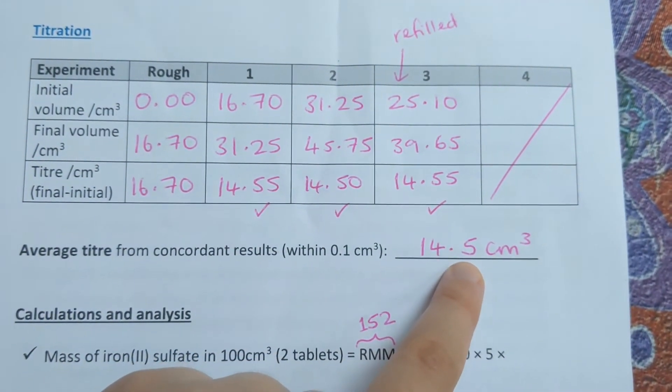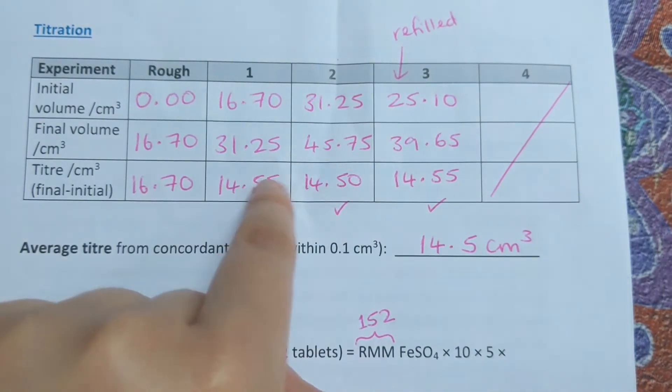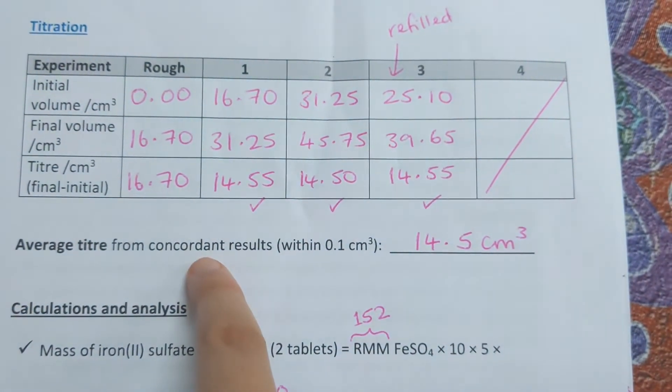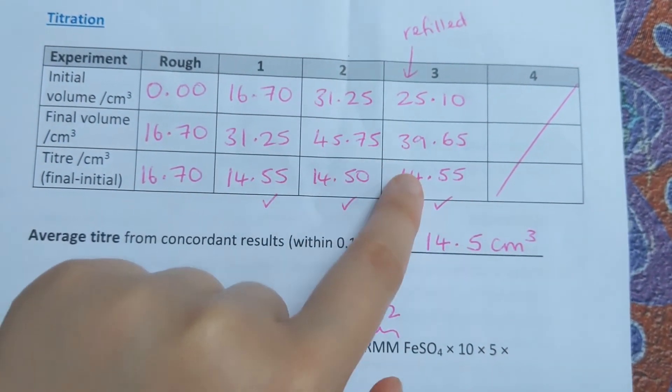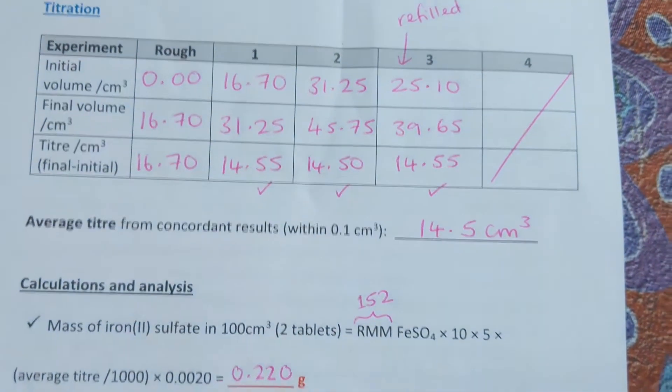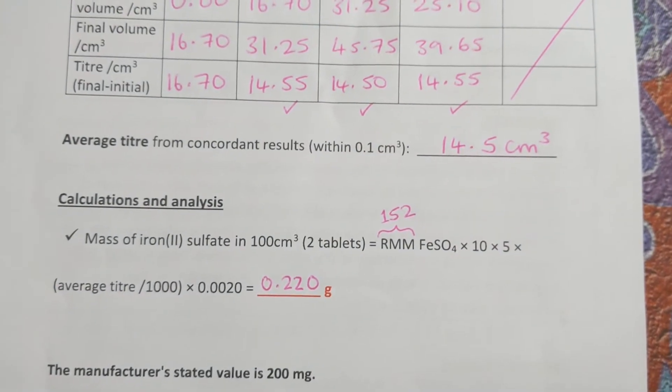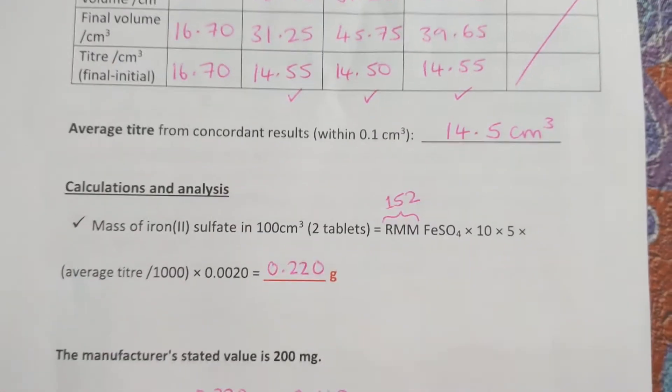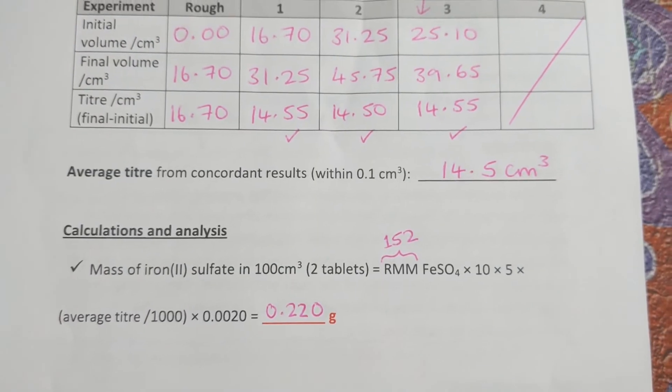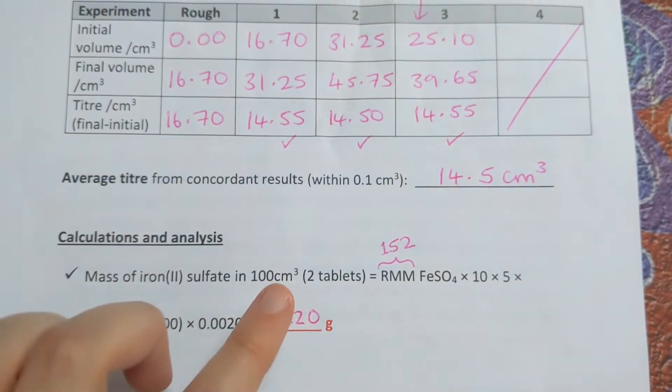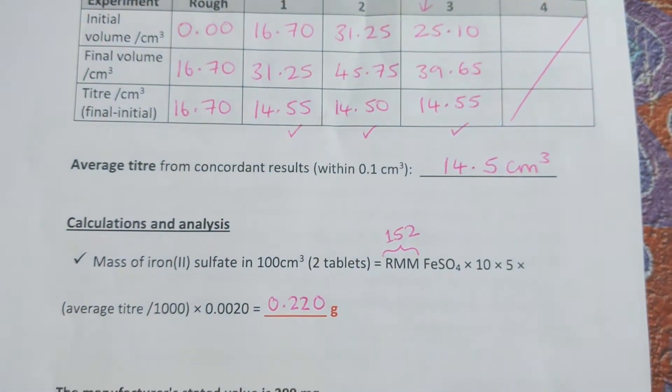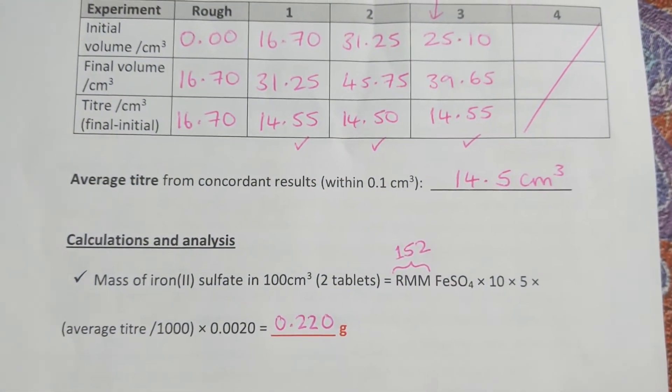We write our average to one decimal place. Remember, to get the average we add up our concordant titers and divide by how many, so we add these and divide by three. Then for the calculations, I've done it all in one line. Our chemistry technicians made up our iron solution by grinding up and dissolving two tablets in 100 cm³ of solution.